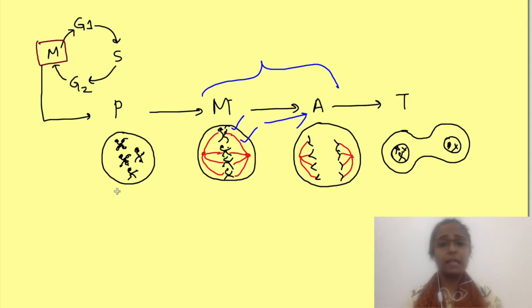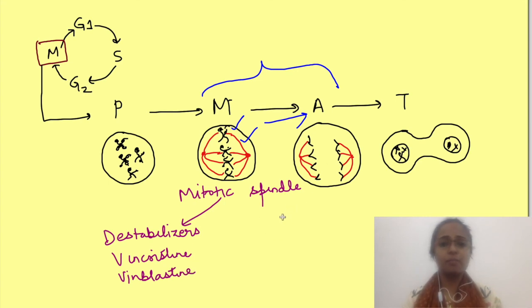So the drugs which act in this phase are of two types. One, mitotic spindle destabilizers. Examples are vincristine and vinblastine. These will prevent the formation of the mitotic spindle. As you know that formation of mitotic spindle is important for alignment of the sister chromatids in the center, so obviously the cell will not proceed to the next phase.